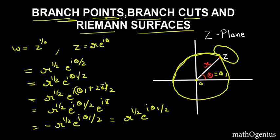The branch point gives us two branches for this function. The first branch is R^(1/2) · e^(iθ/2) and the second branch is the negative of that. There are also triple-valued and four-valued functions — for example, z^(1/4) will have four different branches. There is also a function with an infinite number of branches, which is log(z), whose branch point is also the origin.